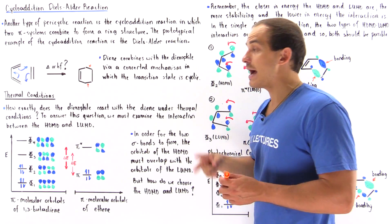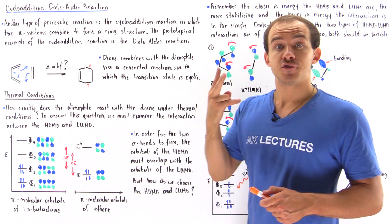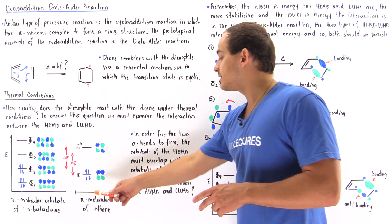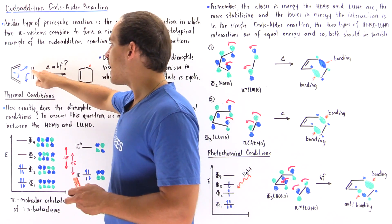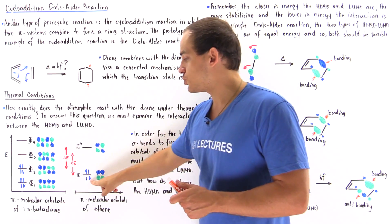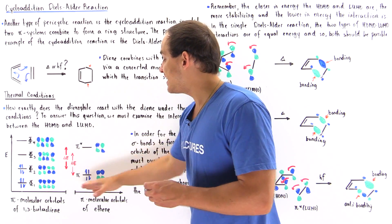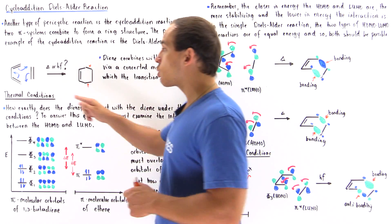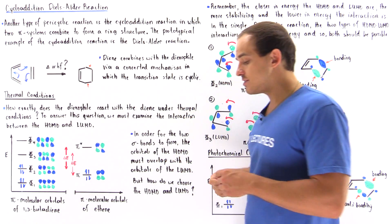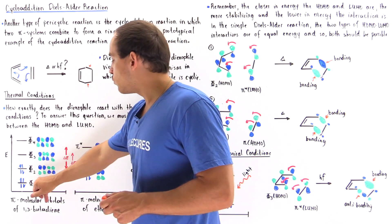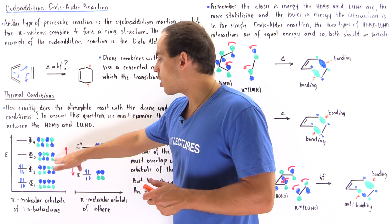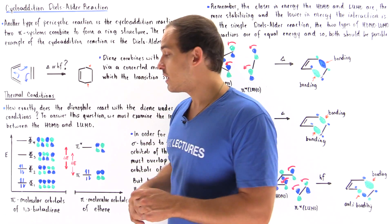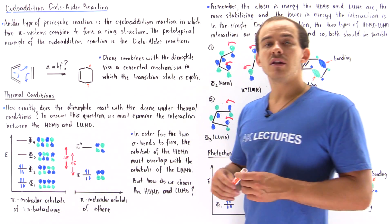For ethene, we have two carbon atoms, giving us two pi molecular orbitals: π (bonding) and π* (anti-bonding). Ethene has two electrons in the pi system, so both fit into the lowest energy orbital, π. For 1,3-butadiene, we have four carbon atoms, giving us four pi molecular orbitals: φ1, φ2, φ3, and φ4. There are four pi electrons, so two go into φ1 and two go into φ2.